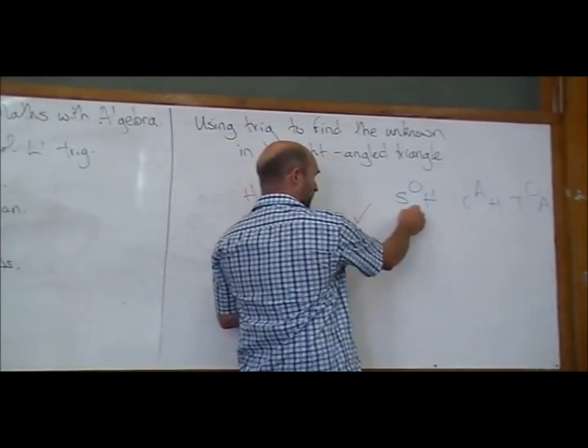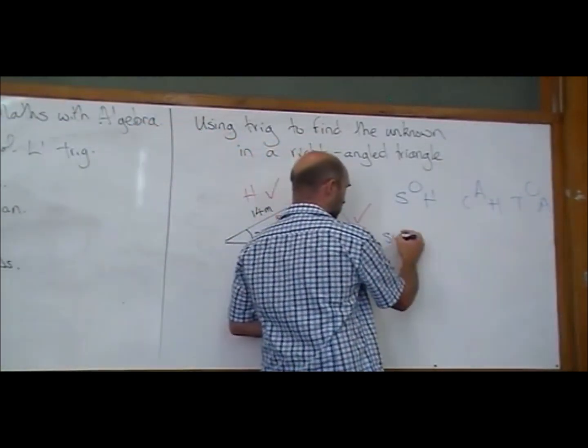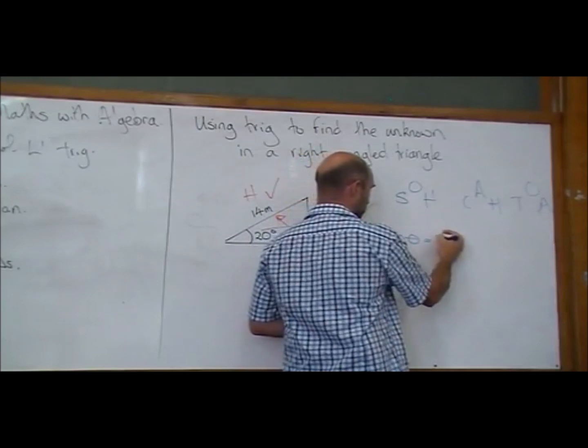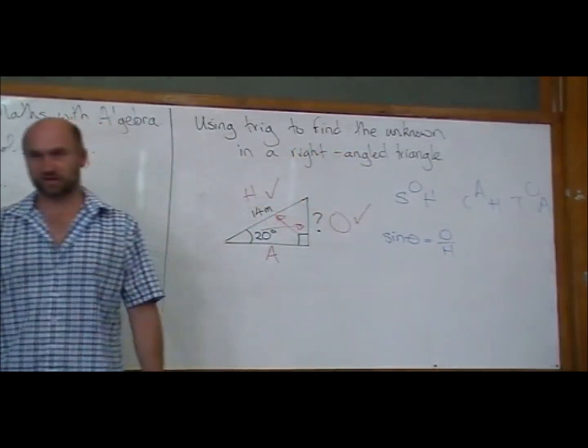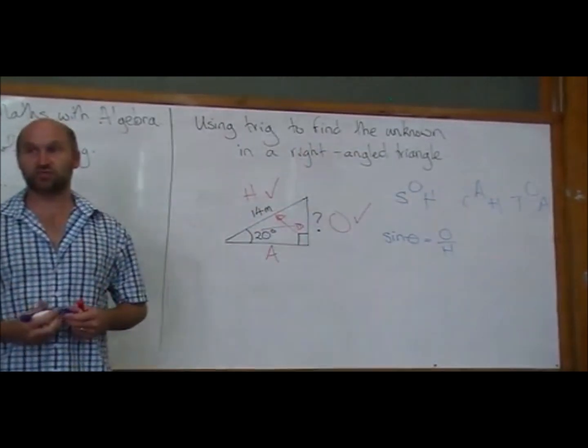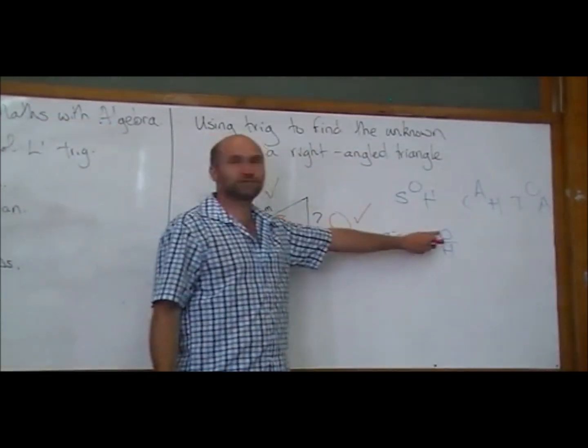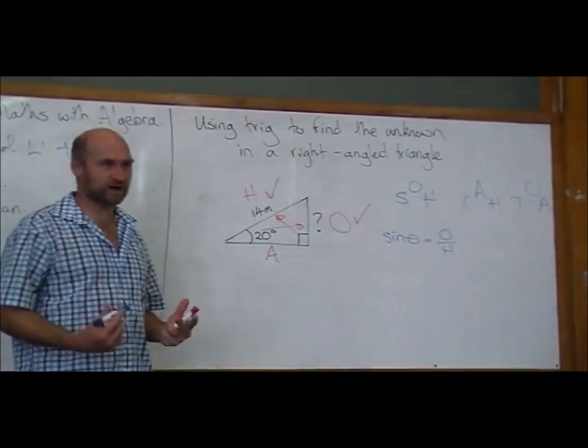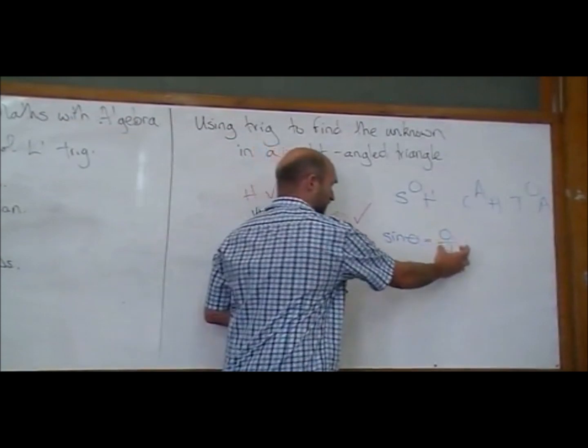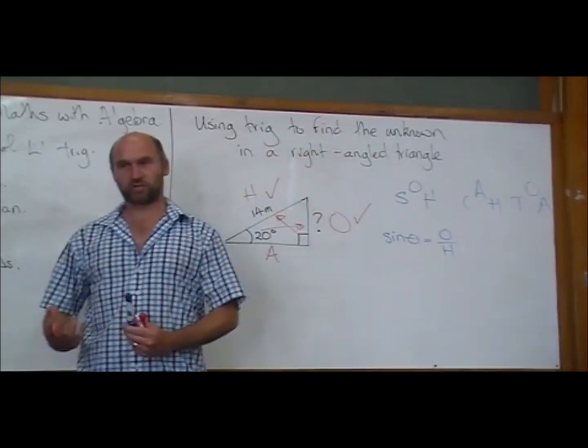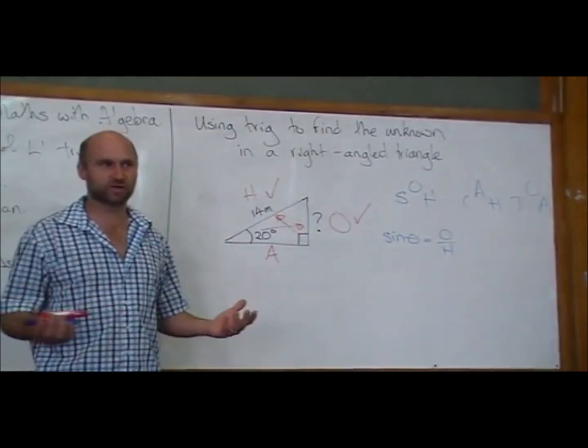And so what that means, that S-O-H means sine angle is equal to opposite over hypotenuse. That's what the S-O-H reminds us of. Sine angle is opposite over hypotenuse. We're trying to find the opposite. So we need to rearrange that to make it opposite equals. So we've got an H on the bottom of the fraction there. And how do we isolate that O and move the H away? What do we need to do?